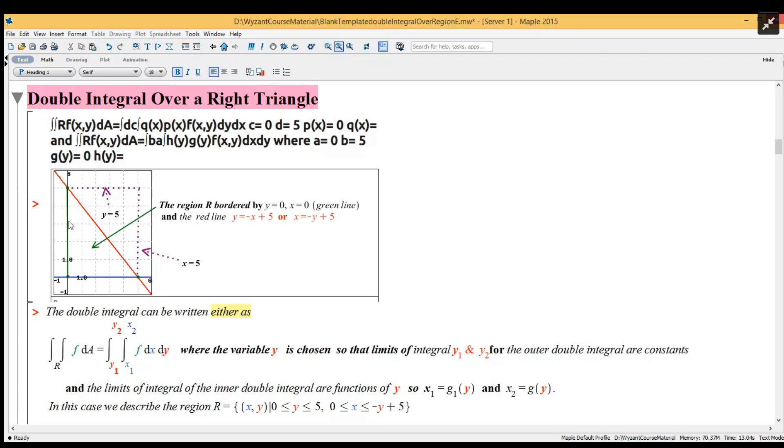And x equals zero, which is the green line, and the red line. Now the red line is kind of the decisive factor here because we can rewrite the red line as either y equals minus x plus five, which is the standard notation.